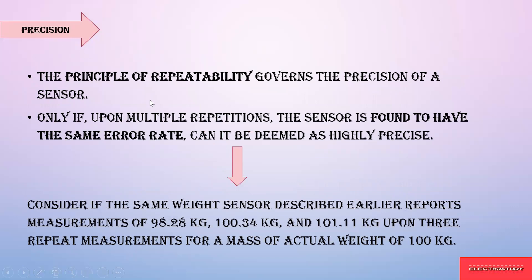Next is precision, which means repeatability. If you keep repeating measurements using a temperature sensor on the same body, it will give you readings with the same error rate — that is deemed highly precise. For example, the same weight sensor measuring repeatedly gives 98.28 kg, 100.35 kg, and 101.11 kg. Based on these three repeated measurements, you can say the actual weight is around 100 kg. How precisely you can determine that value is called precision.